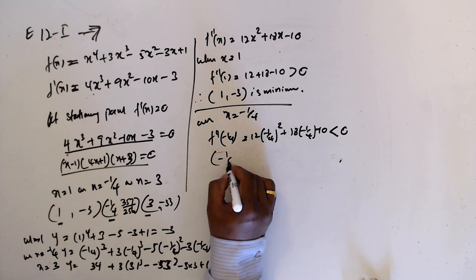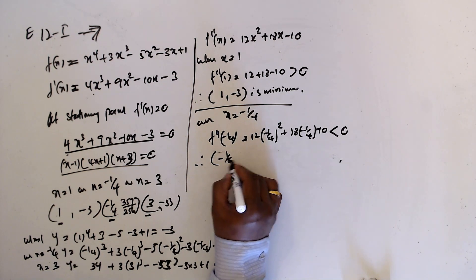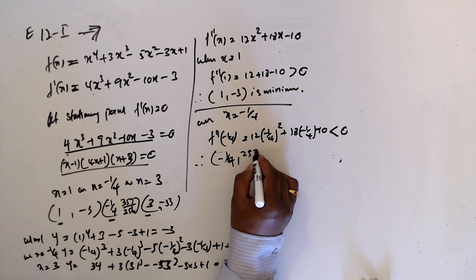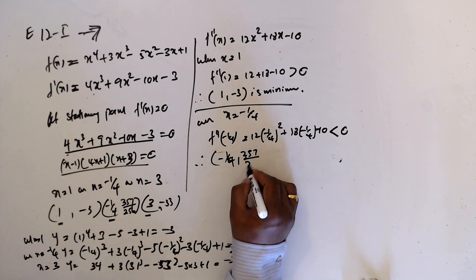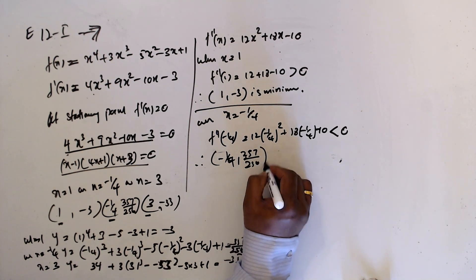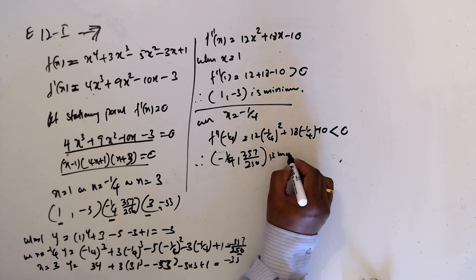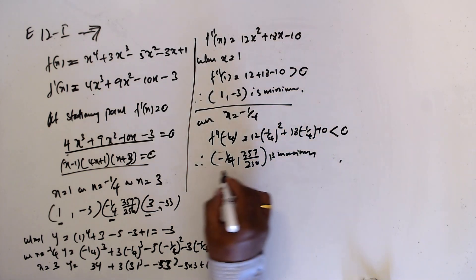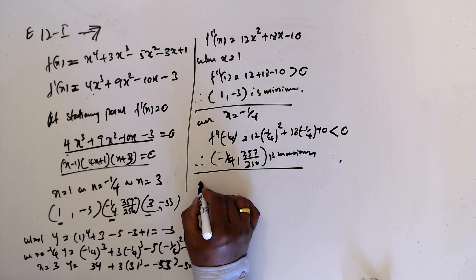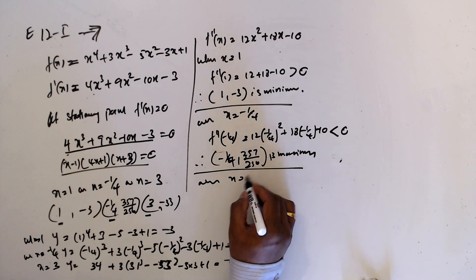Hence (-1/4, 357/256) is a maximum. And when x equal 3...